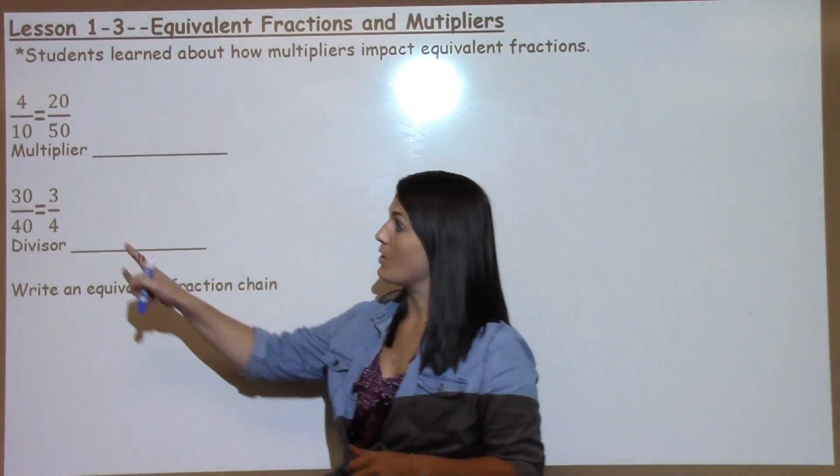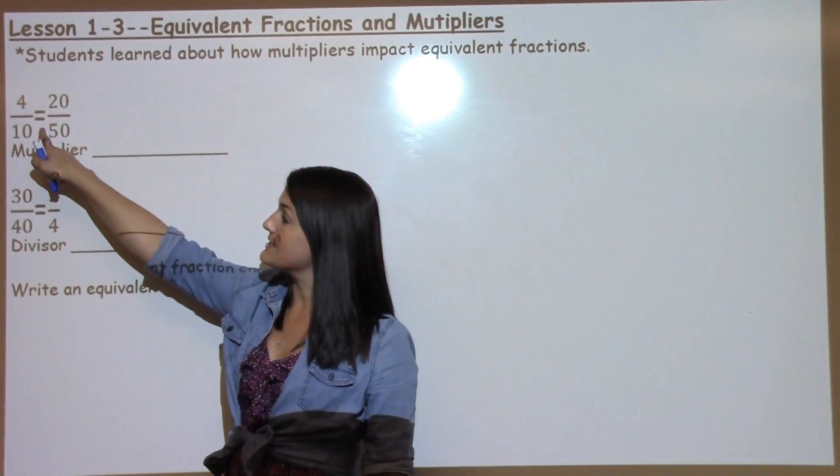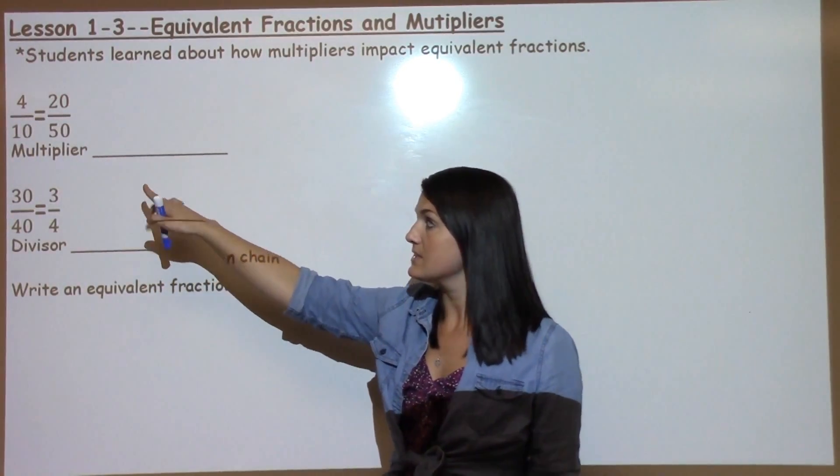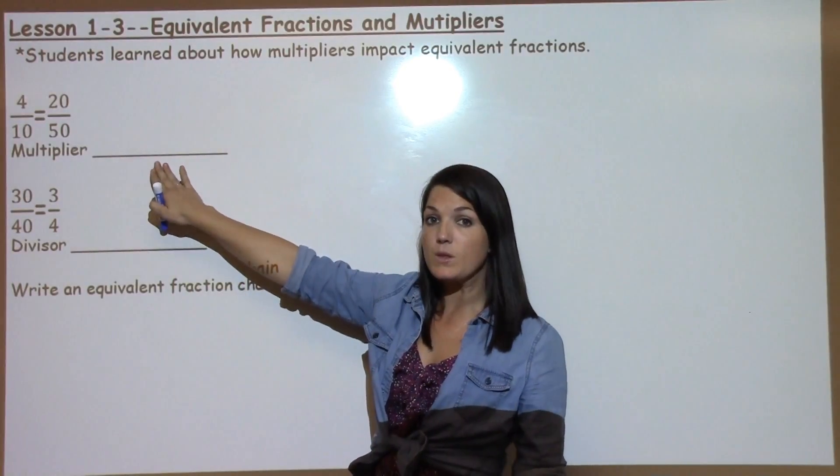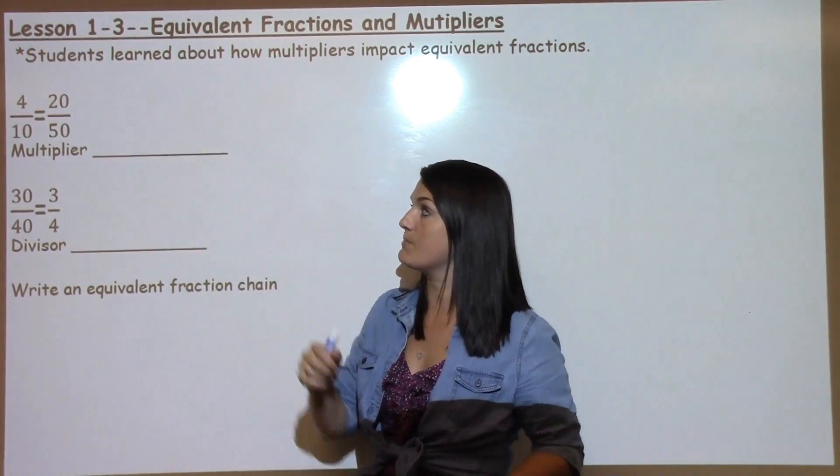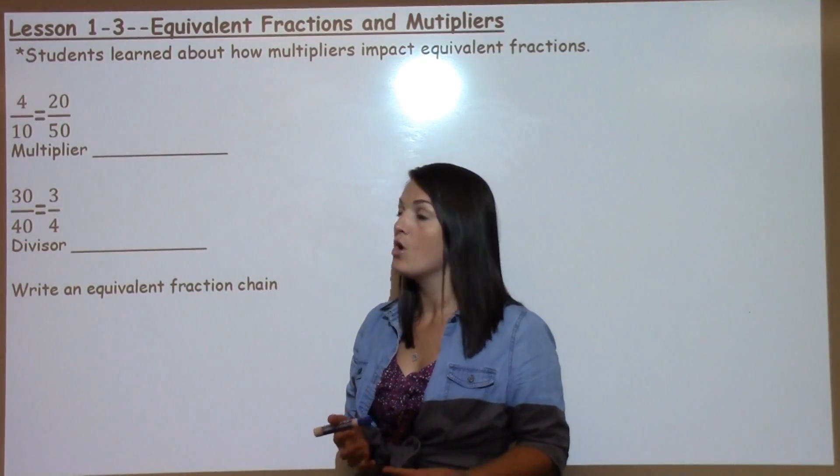We're going to look at our first example, which shows that 4 tenths is equal to 20 fiftieths. Students need to determine what the multiplier is that helps to make those fractions the same or equivalent.